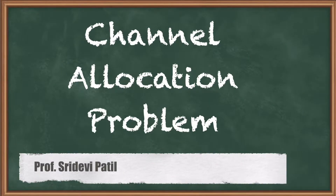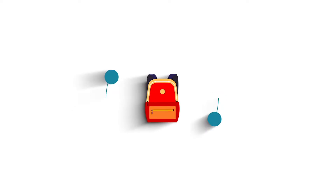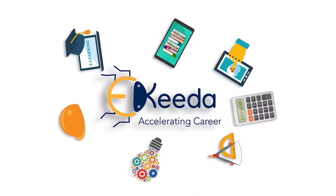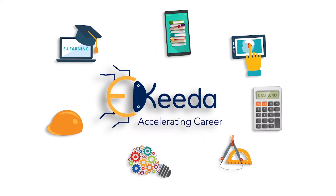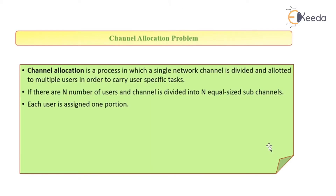We are going to study channel allocation in the data link layer. Channel allocation means if there is a channel where data has to be transmitted, on what basis the user can access the channel. Channel allocation is a process in which a single network channel is divided and allotted to multiple users in order to carry user-specific tasks.